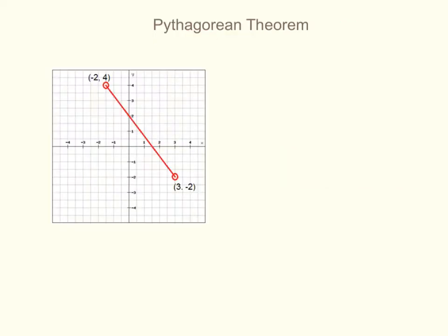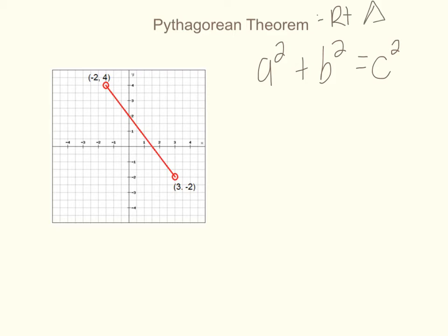First, we're going to find the distance of this line — how long this line is — using the Pythagorean theorem. So a squared plus b squared equals c squared. In order to use the Pythagorean theorem, we need a right triangle, so we can make a right triangle on this coordinate plane. I'm going to make my triangle go up here and over here, so now I have a right triangle.